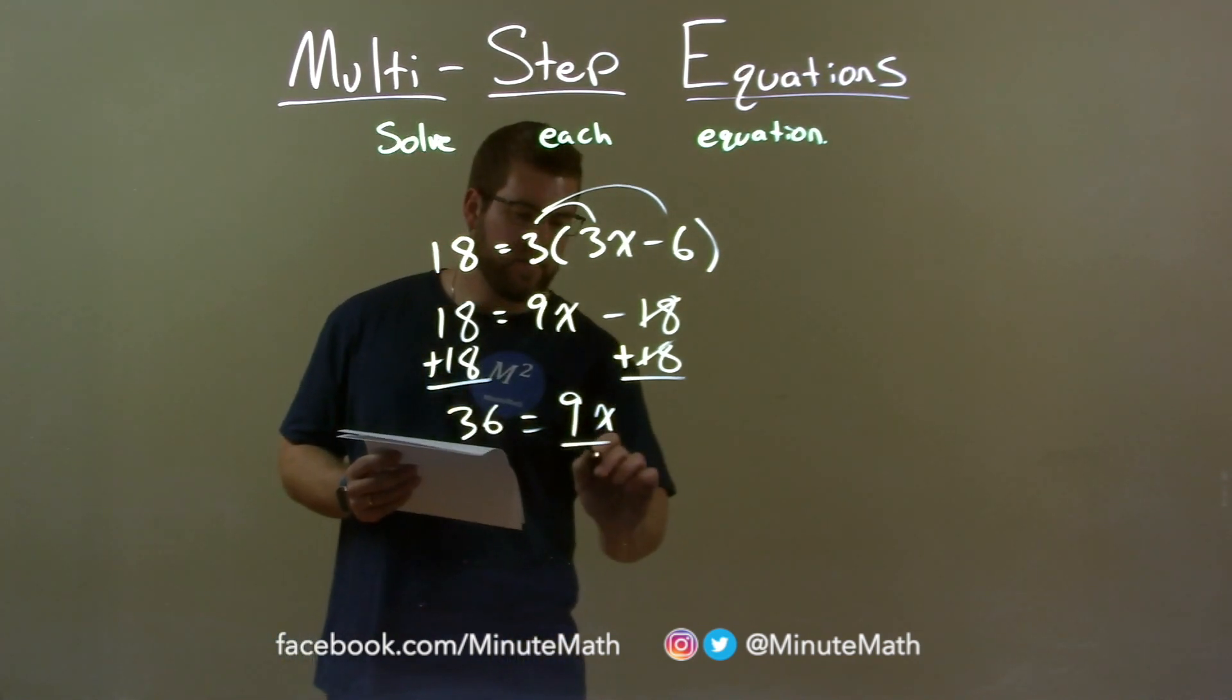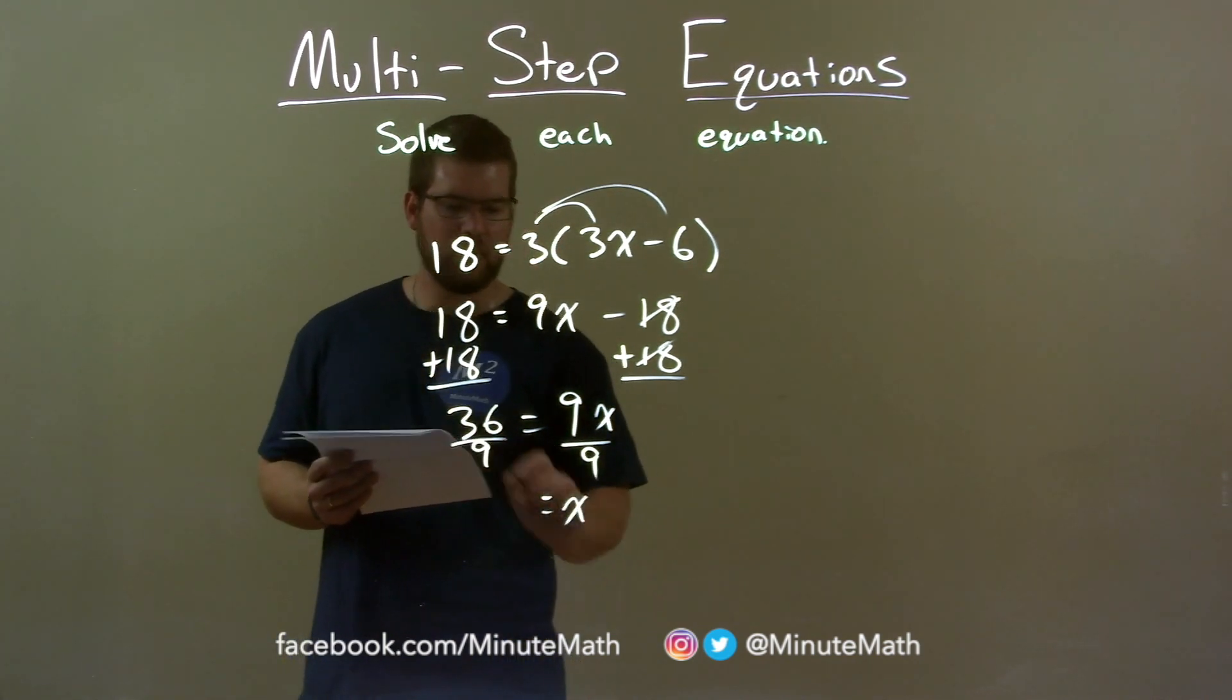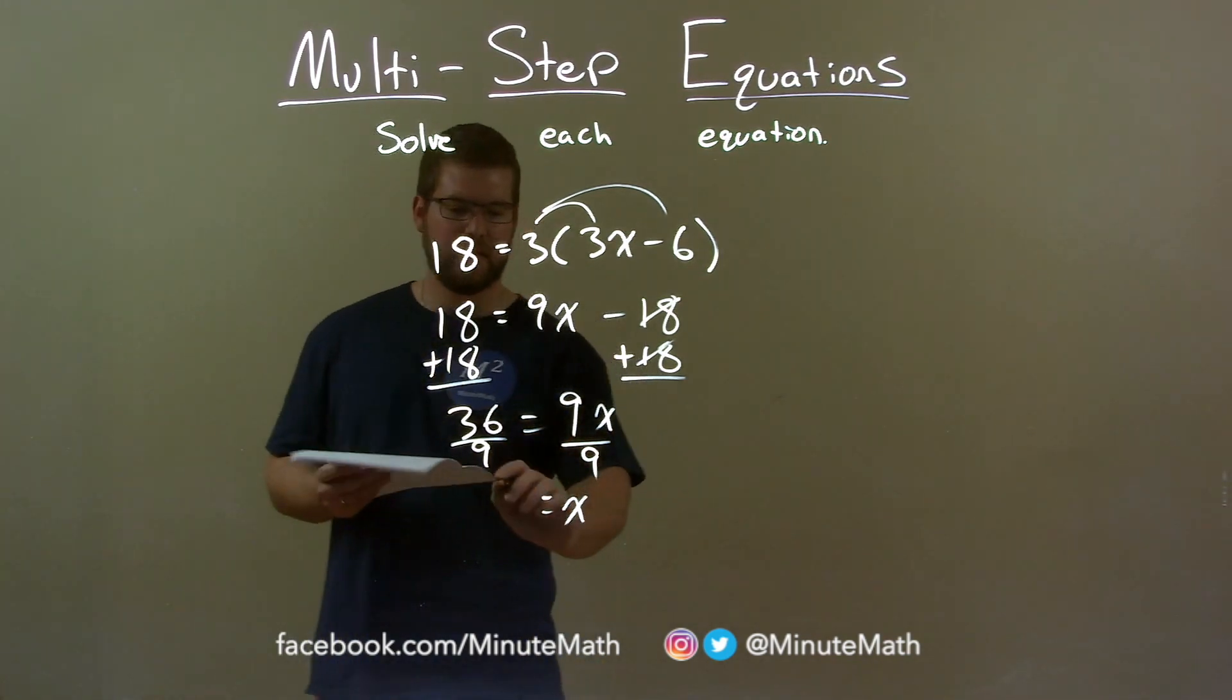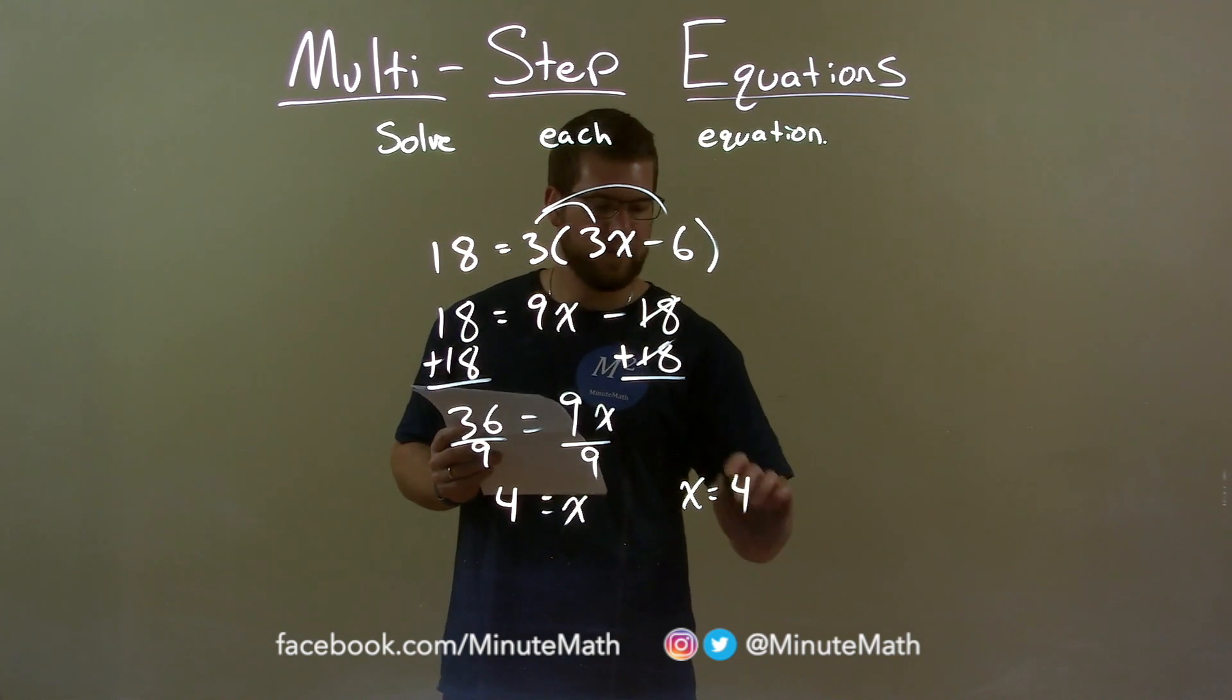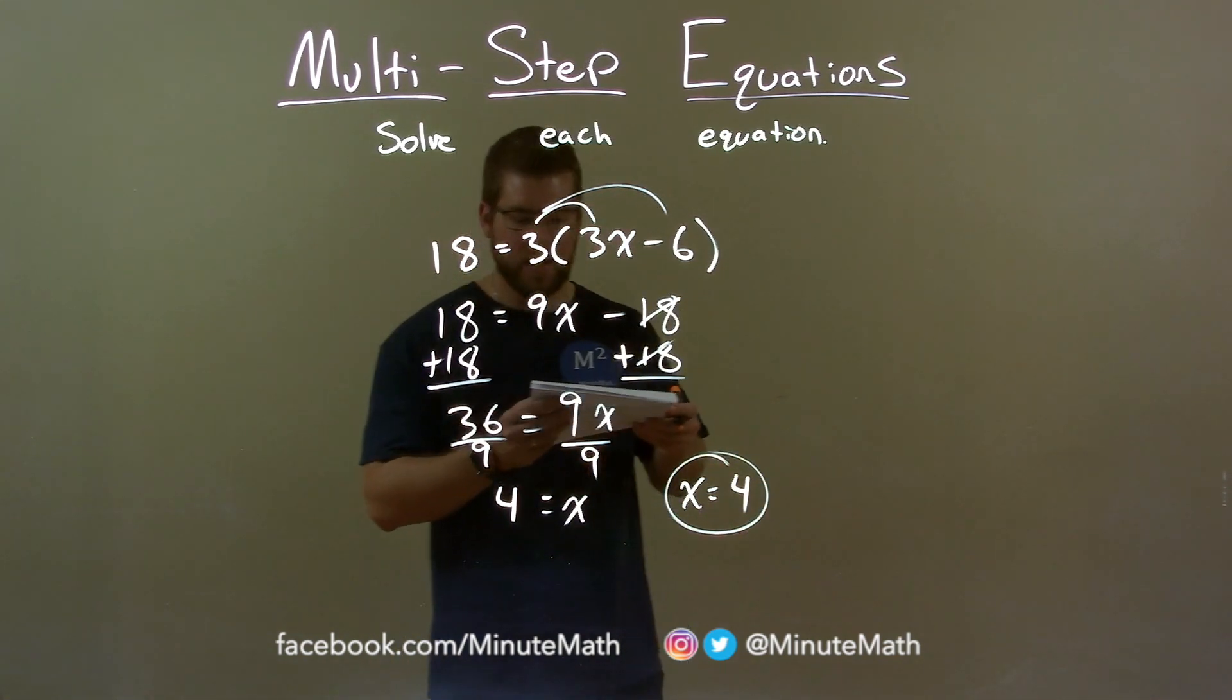I then divide both sides by 9, giving me x by itself, and 36 divided by 9 is 4. I can rewrite this so x comes first: x equals 4 is our final answer.